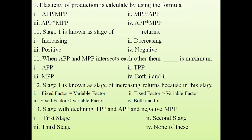The ninth question: Elasticity of production is calculated using the formula MPP divided by APP. If you know this formula, you can calculate elasticity at any stage — stage one, two, or three — without memorizing the values for each stage separately.